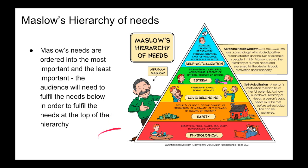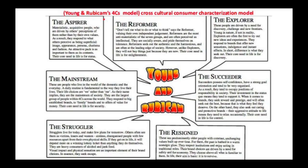Maslow's Hierarchy of Needs — he ordered them from the most important to the least important. In order to obtain the top, the audience will need to fulfil all of those below it. This links to the Young and Rubicam 4Cs, which says that in this world we have seven different types of audiences: the Aspirer, the Reformer, the Explorer, the Succeder, the Resigned, the Struggler and the Mainstream. Pause this now to read what is being said about these different types of audiences.